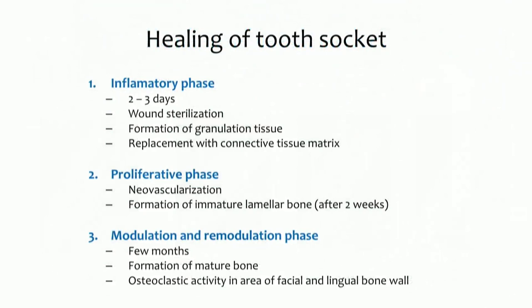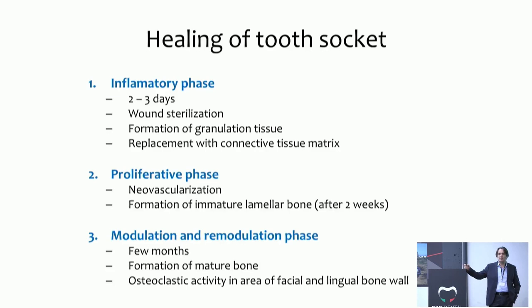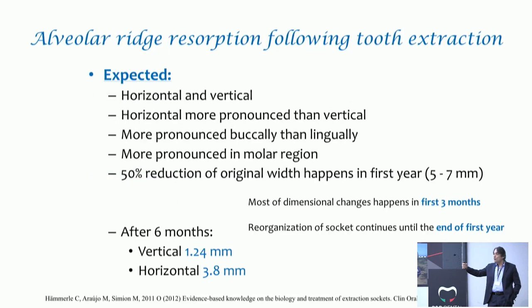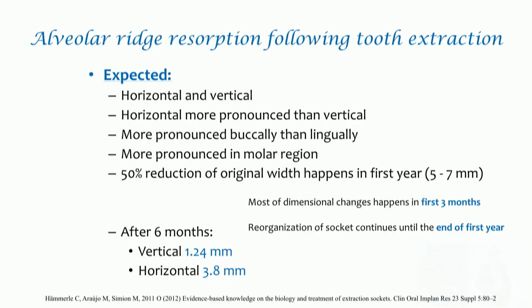After extraction, the socket undergoes structural and morphological changes we can divide into three phases, all taking three to six months. Socket healing can be observed clinically with closure by firm epithelial tissue between 10 and 20 weeks, and radiographically with bone filling of the socket at three to six months. Horizontal and vertical resorption both occur; horizontal is more pronounced than vertical, more pronounced in the buccal region than the palatal, and more pronounced in the molar region than the frontal. Most dimensional changes happen within the first three months.